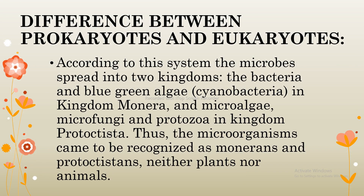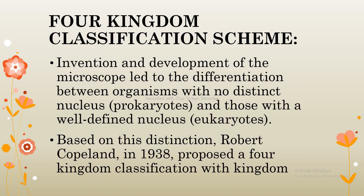According to this system, the microbes are spread into two kingdoms. Bacteria and blue-green algae (cyanobacteria) are in Kingdom Monera, while microalgae, microfungi, and protozoa are in Kingdom Protista. Thus, the microorganisms came to be recognized as Monerans and Protistans — neither plants nor animals.